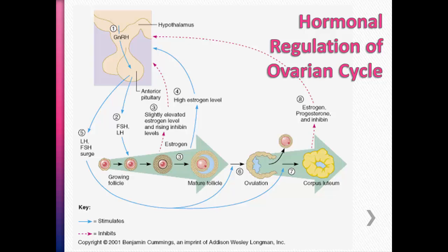This causes a slight dip in FSH levels released. Since FSH is follicle-stimulating, a dip in FSH affects follicle growth. Only the most dominant follicle has enough FSH receptors to handle this slight dip. Since the dominant follicle has more receptors, it can continue developing with lower FSH levels. The non-dominant follicles don't have those high FSH receptors, so they can't get enough FSH and they die off. Only the dominant follicle can continue to grow and develop.